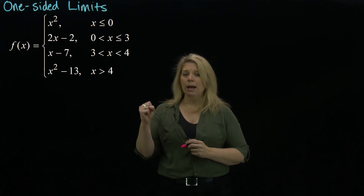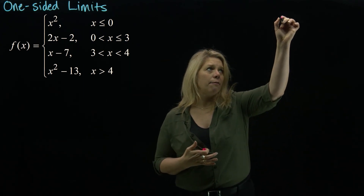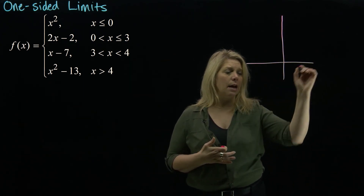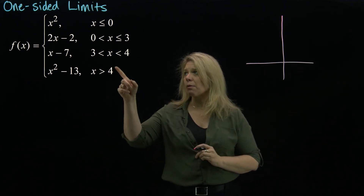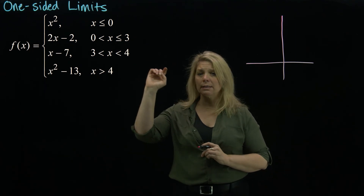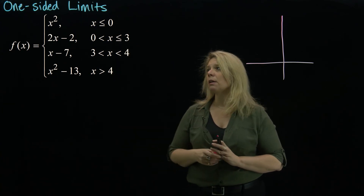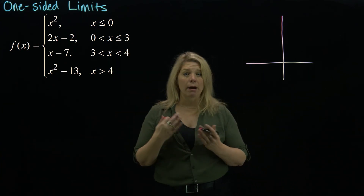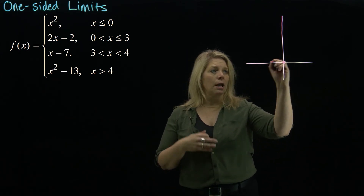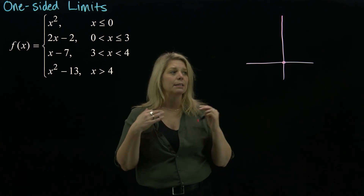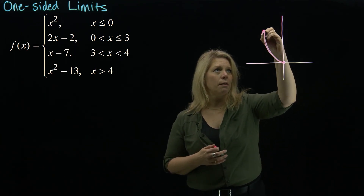The first piece is f of x equals x squared. We know what the graph of y equals x squared looks like. We want to identify where on that parabola we are when x equals 0 — at the origin — and then show only the part where x is less than or equal to 0, which is the left half of the parabola.